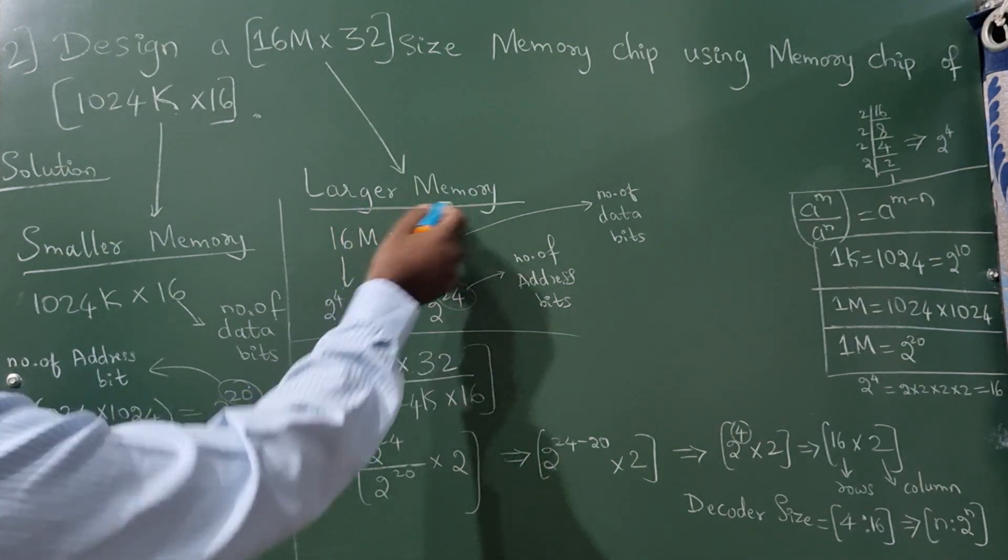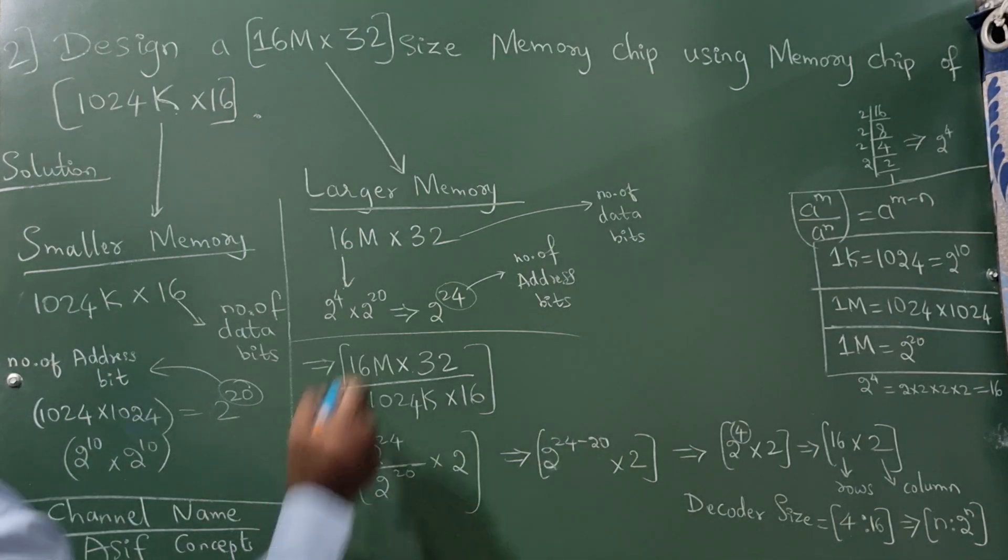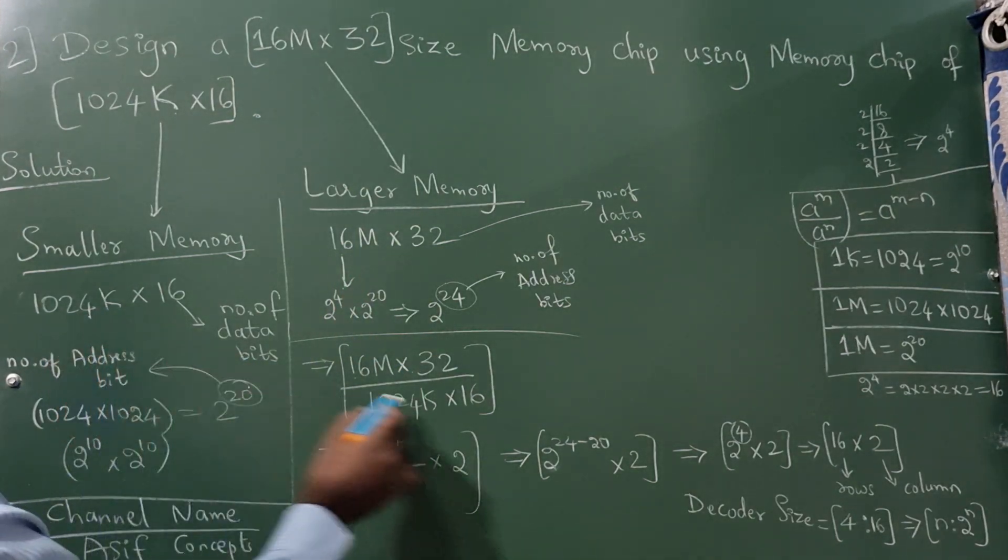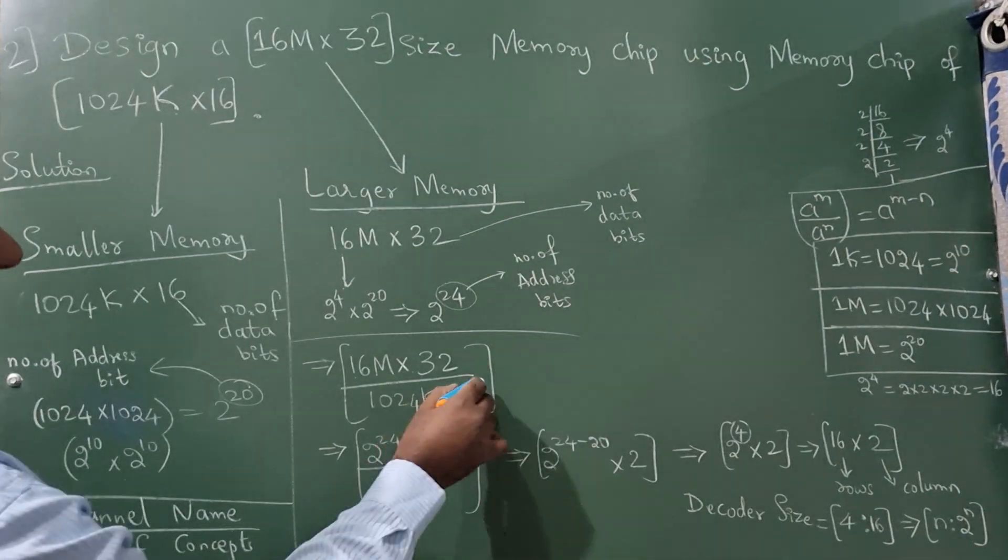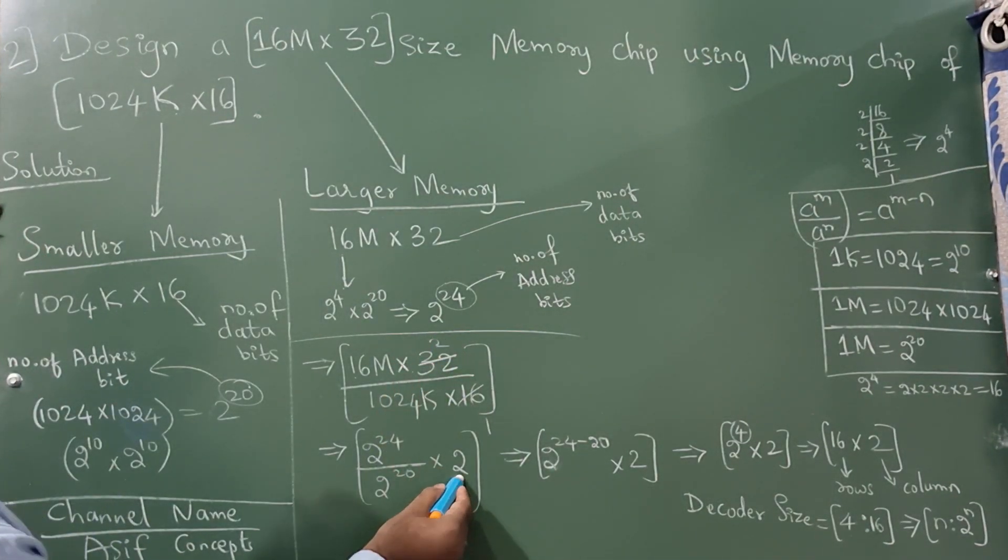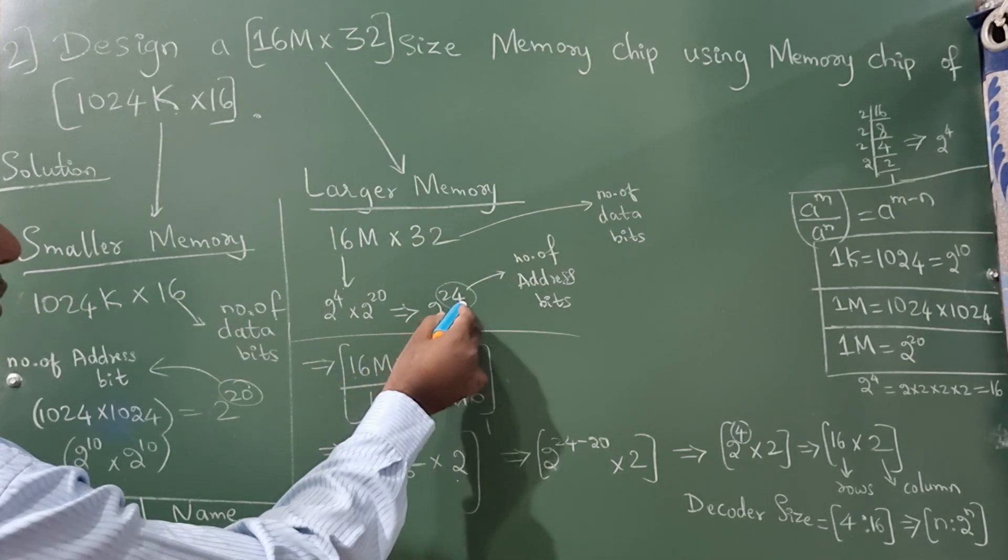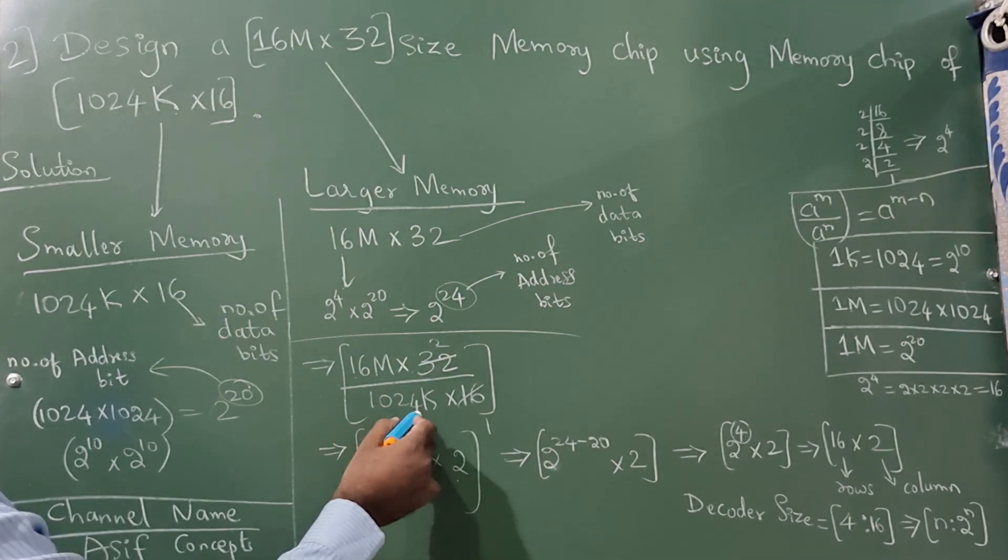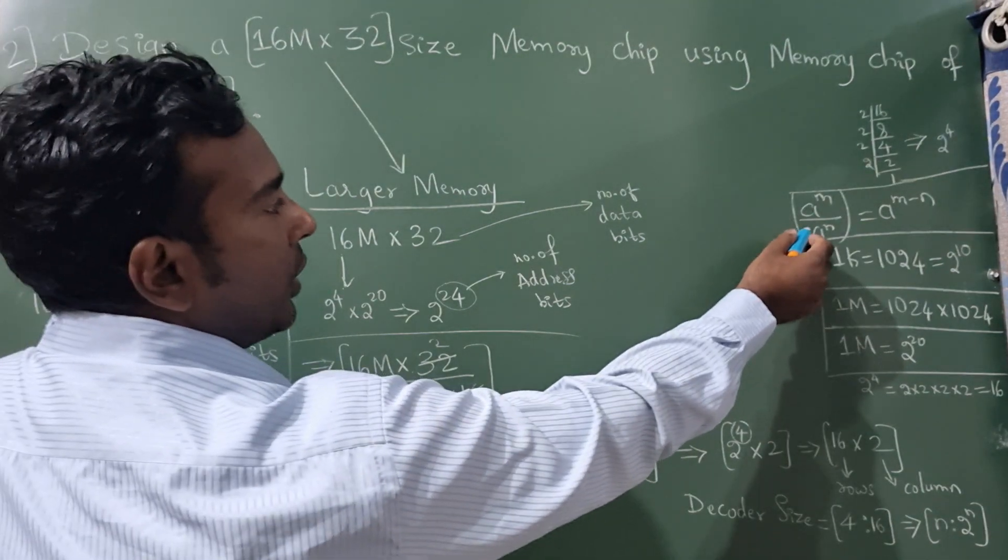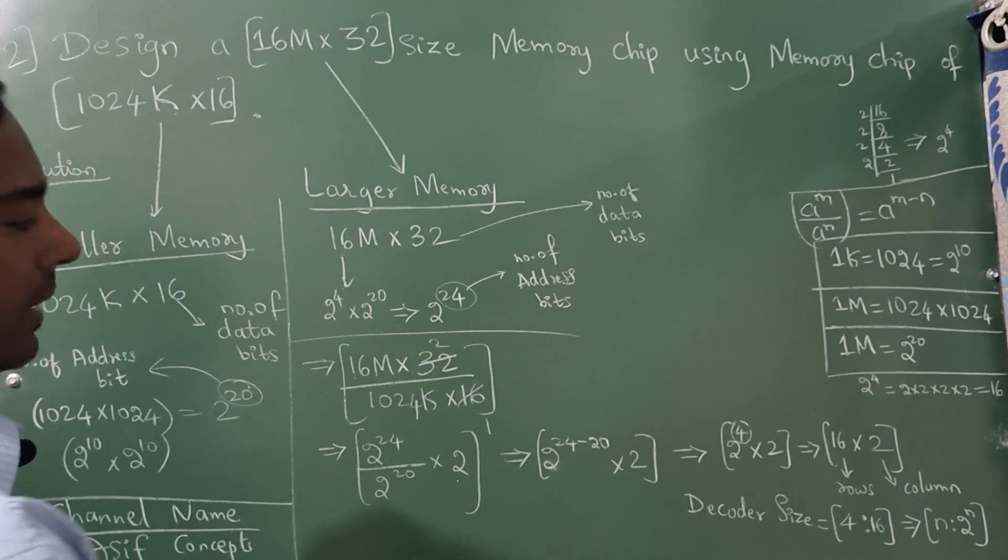Now next, divide larger memory with the smaller memory. So I have written 16M into 32 here and 1024K into 16 here. 16 ones are, 16 twos are, so I have written this 2 here. Now this 16M is 2 raise to 24, this 1024K is nothing but 2 raise to 20.